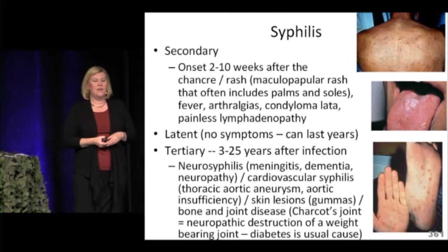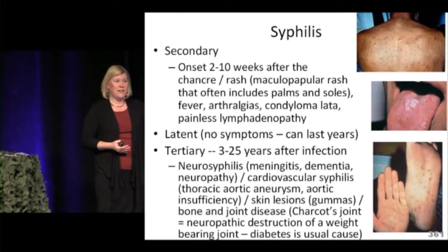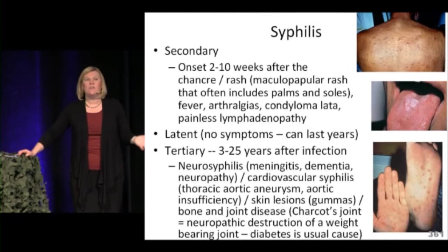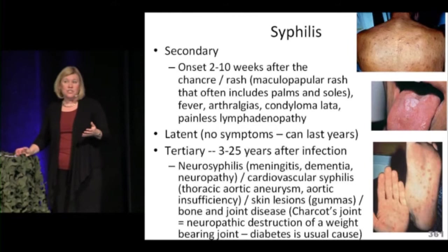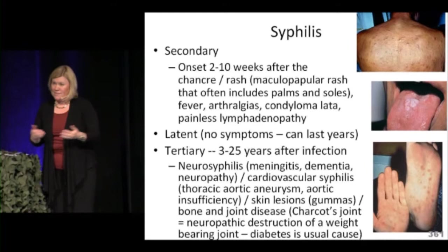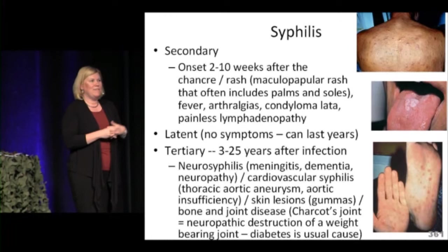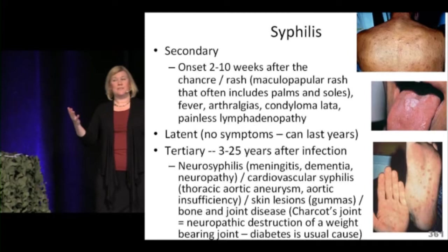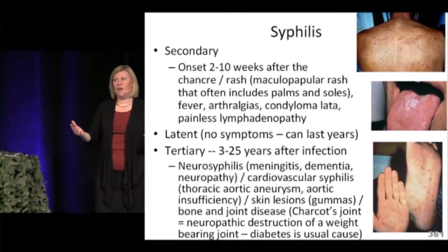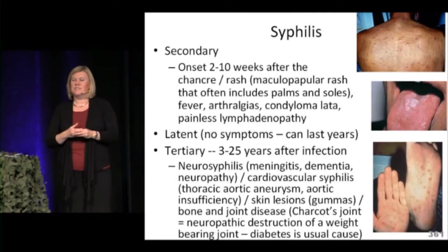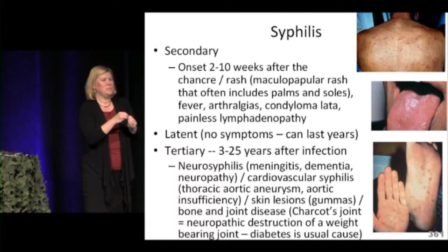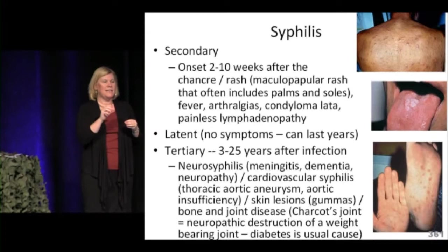Secondary syphilis can occur two to ten weeks after the primary chancre if untreated. Syphilis is called the great imitator because it can look like many things. It often presents with a nonspecific maculopapular rash, sometimes on the palms and soles, along with fevers and joint pain. Condyloma lata — flat warts in moist areas like skin folds or perianally — can also occur. It can cause painless lymphadenopathy. When you see a rash you can't place, think about sending an RPR — the rash is generally not pruritic.